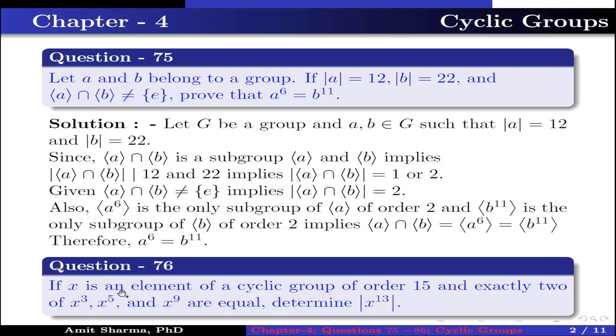Question number 76. If X is an element of a cyclic group of order 15, and exactly 2 of X³, X⁵, and X⁹ are equal, determine the order of X¹³.